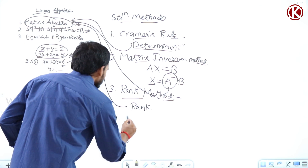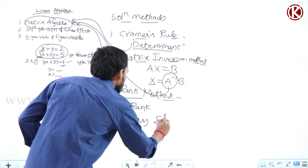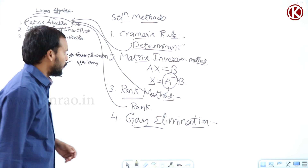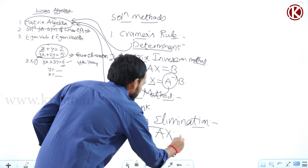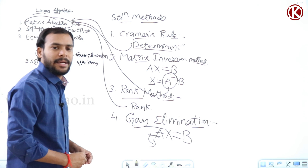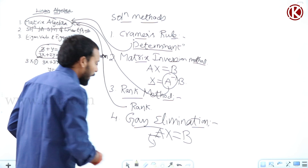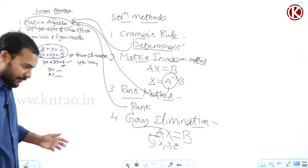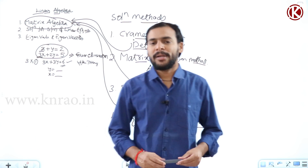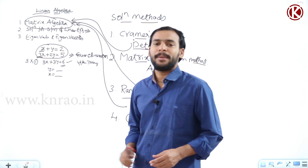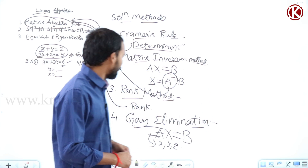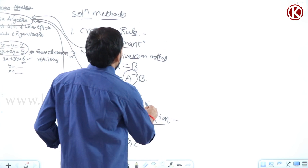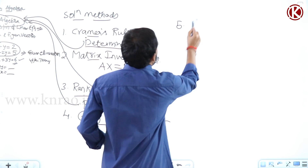The fourth method is the Gauss elimination method. In this method, we take the form AX equals B and convert A into upper triangular matrix form, so that the values of unknowns — let's say x, y, z — can be easily found out. The same method is applicable to any number of equations.